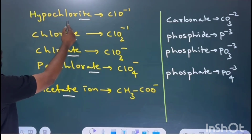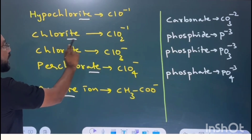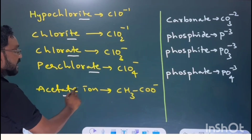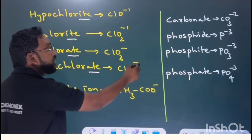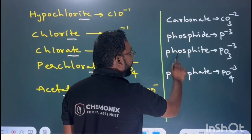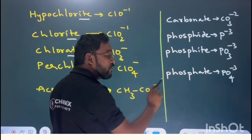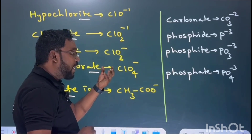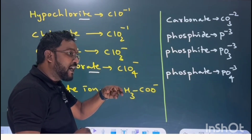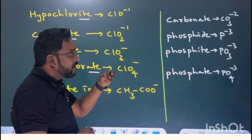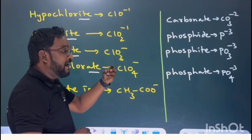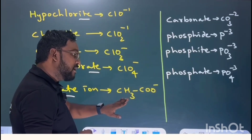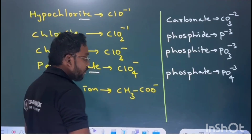So to summarize: if the name of an ion ends with '-IUM', that is a cation. If it ends with '-ITE', '-IDE', or '-ATE', that is an anion. Anion carries a negative charge. Cation carries a positive charge.